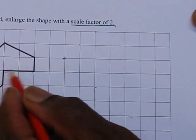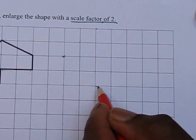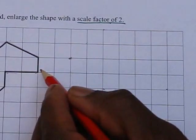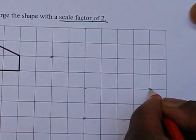And this is 2 across, 1, 2 so it will be 4, 1, 2, 3, 4. This is 1 up so it will be 2 up, 1, 2.